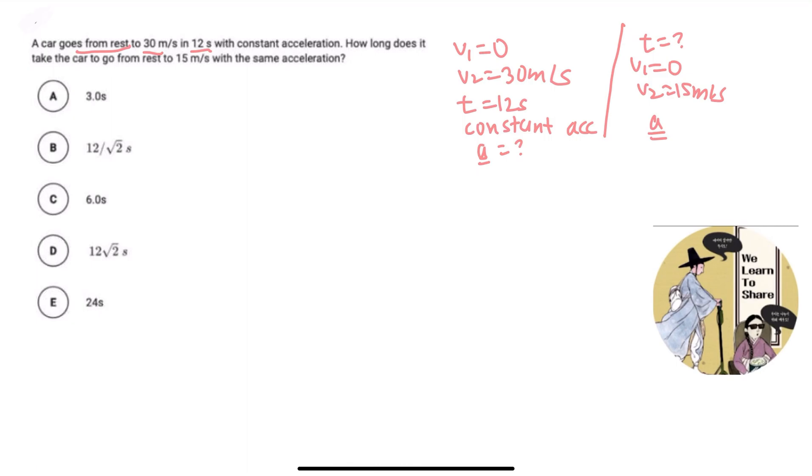Let's first compute the value of acceleration in the first case. So we use v2 equals v1 plus a t, because it's a constantly accelerated motion we can use this formula, right? And if we substitute the values inside here, you would get 30 equals a t, so 12 a.